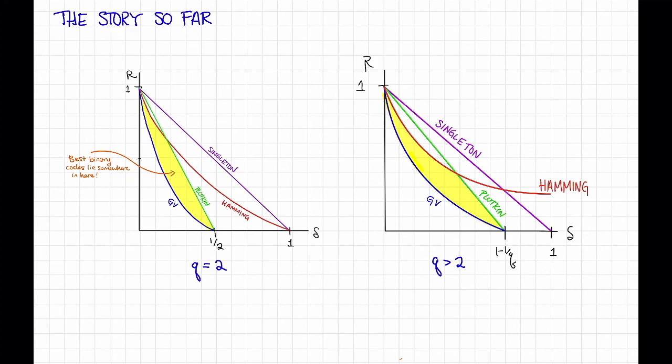Looking at this picture, you might wonder why we bothered to prove the Singleton bound. It seems like the Plotkin bound always strictly dominates it. On the one hand, that's true. On the other hand, in a future video, we are going to see a family of codes that achieves the Singleton bound. Before we get there, you should think about how that might be possible, given the Plotkin bound that we've just proved.